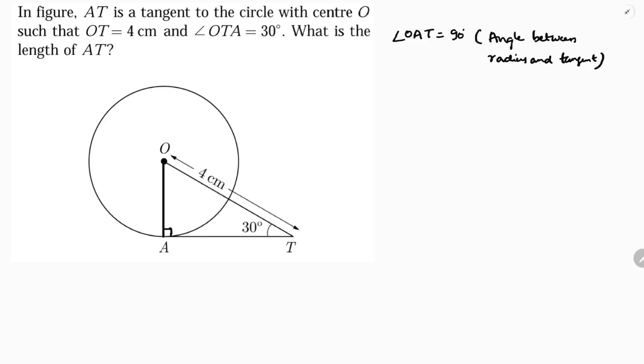Now it is a right angle triangle. I need to find the length of AT. If we consider this 30 degrees as theta, then AT will be adjacent and OT will be hypotenuse because it is opposite to 90 degrees.